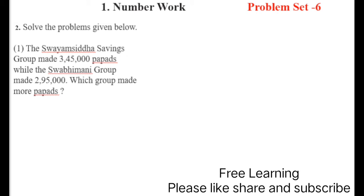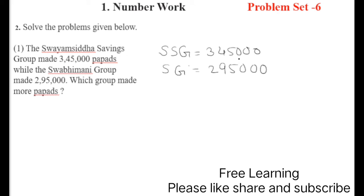Question number two, first part: the Swam Siddha Saving Group made three lakh forty-five thousand papads, while the Swam Bhimani Group made two lakh ninety-five thousand papads. Which group made more papads? Write down the numbers — Swam Siddha Saving Group made three lakh forty-five thousand, and Swam Bhimani Group made two lakh ninety-five thousand. Count the digits: if they are the same, see the first digit. Three is bigger, so this number is bigger.